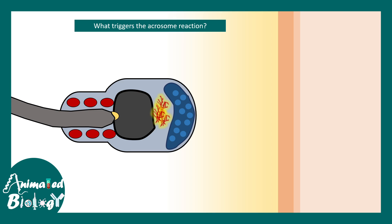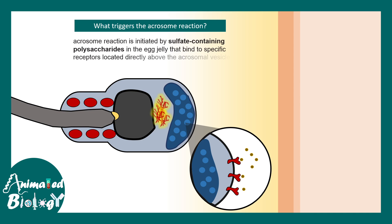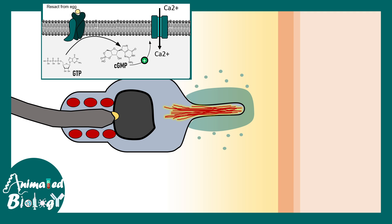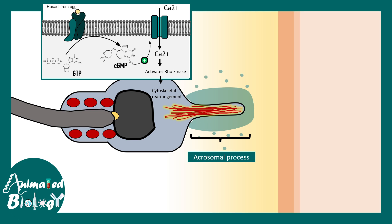The acrosomal reaction is initiated by sulfate-containing polysaccharides present in the egg jelly — again a highly species-specific interaction. Specific molecules from the egg trigger a cyclic GMP response, allowing calcium to enter the cell. The calcium elevation activates Rho kinases, which facilitate cytoskeletal rearrangement, creating the acrosomal process — a thin filament of actin fibers.